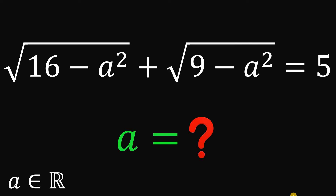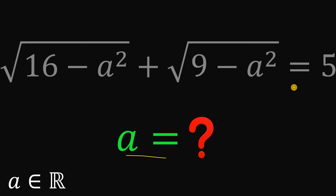In this question, A is a real number. Solve for the real value of A that satisfies this equation: square root of 16 minus A squared plus square root of 9 minus A squared equals 5.